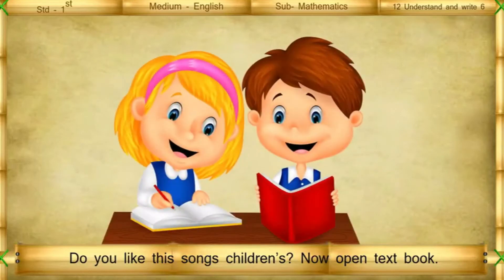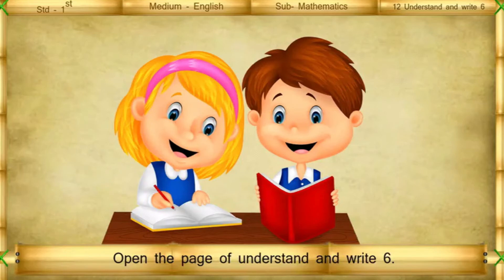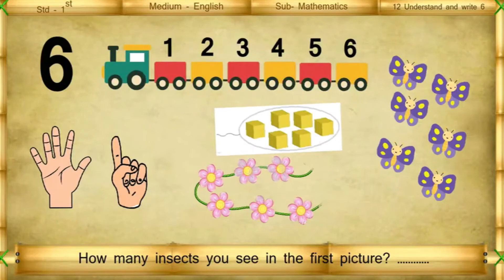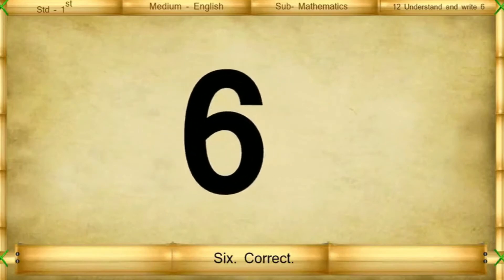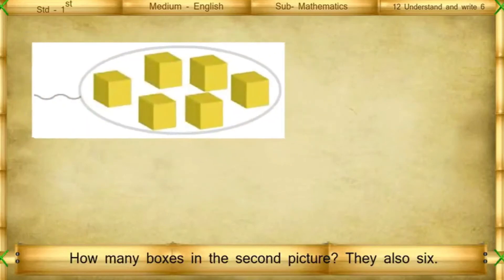Now, open your textbook. Open the page of Understand and Write 6. How many insects do you see in the first picture? How many boxes do you see in the first picture? 6.